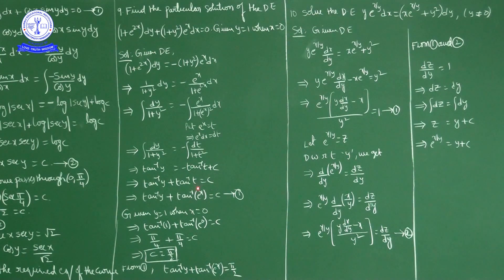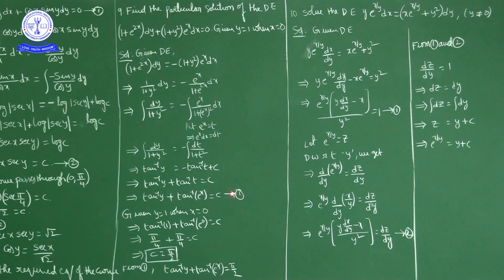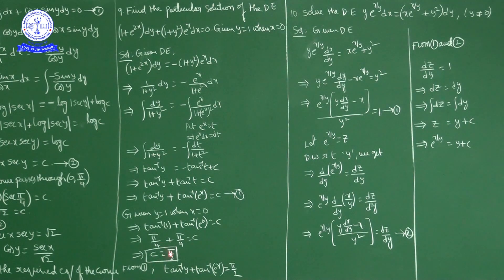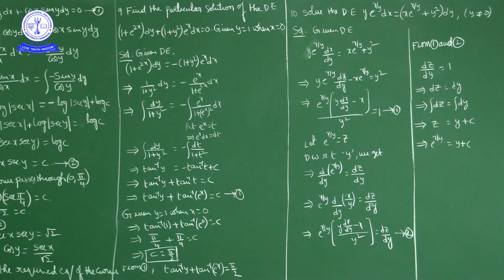To find the particular solution, substitute x = 0 and y = 1: tan⁻¹(1) + tan⁻¹(e⁰) = c. Since e⁰ = 1, this gives tan⁻¹(1) + tan⁻¹(1) = π/4 + π/4 = π/2. So c = π/2. The particular solution is tan⁻¹y + tan⁻¹(eˣ) = π/2.